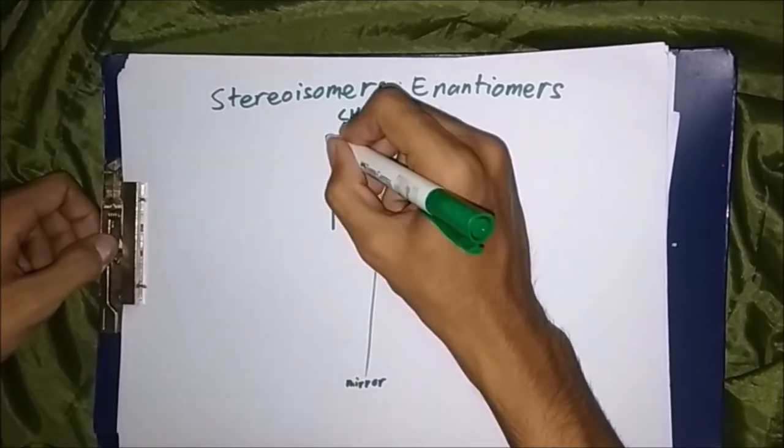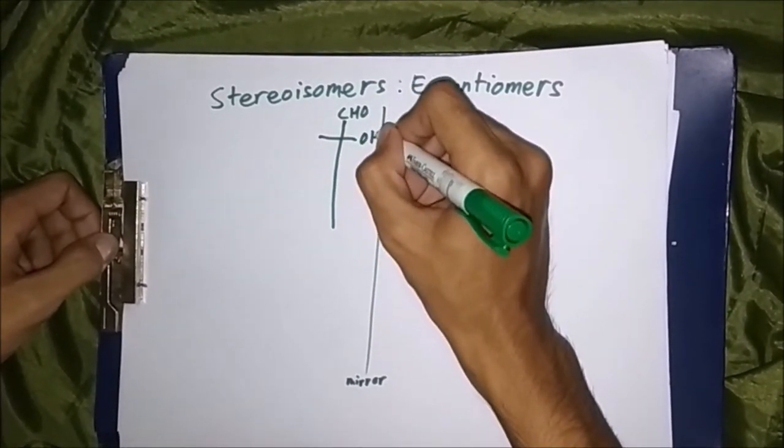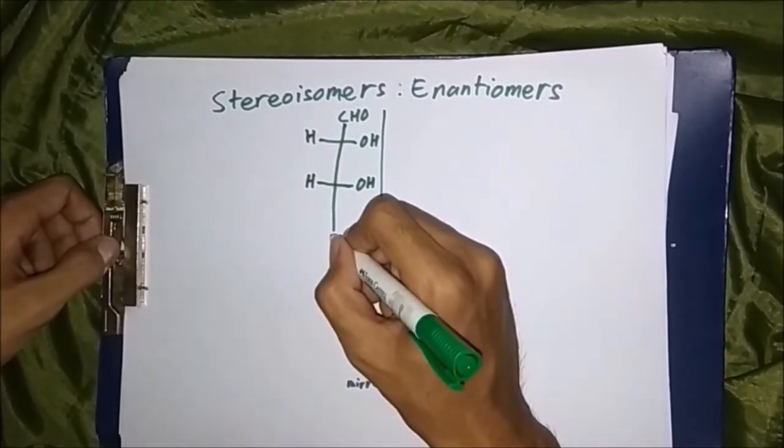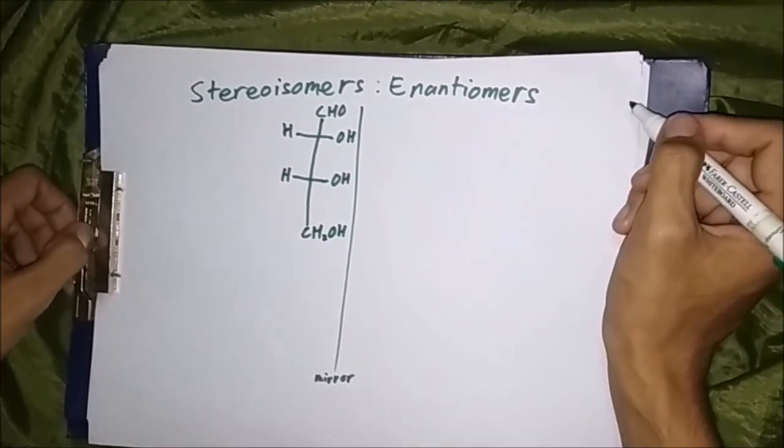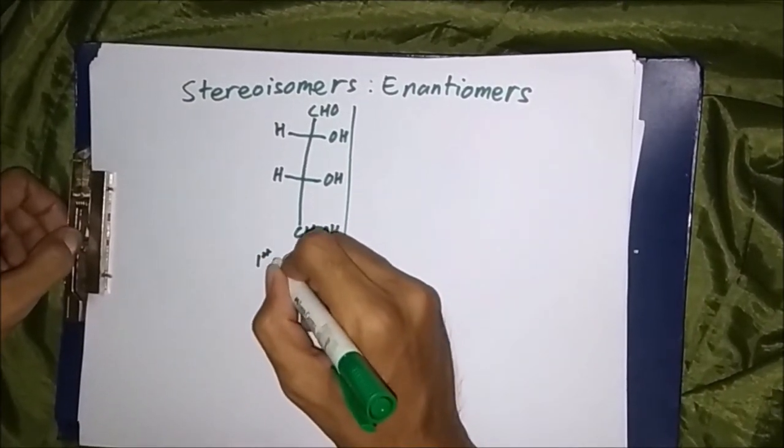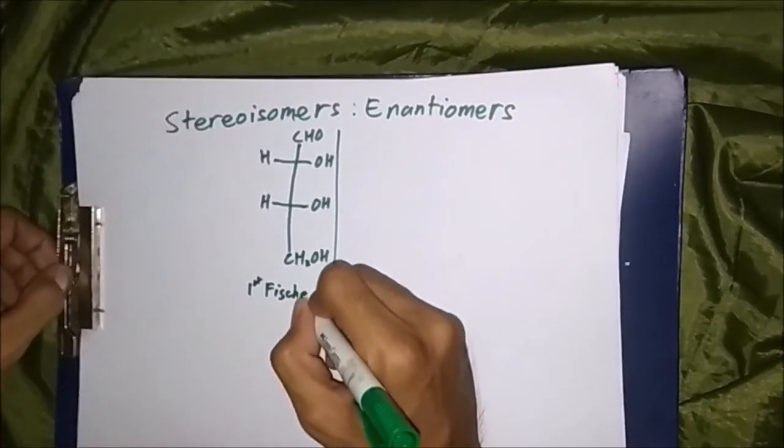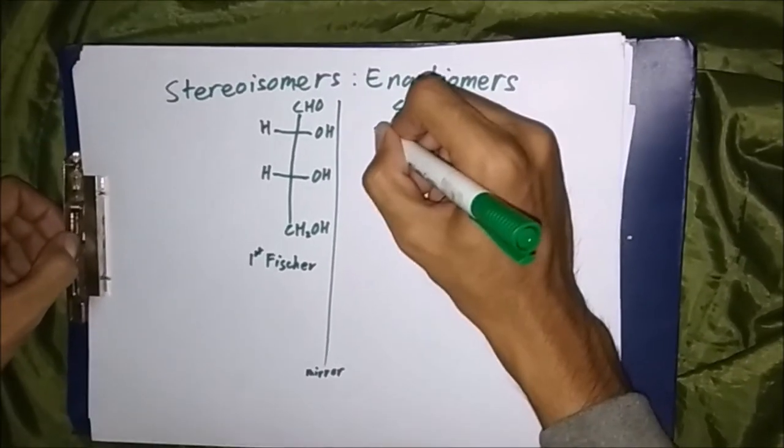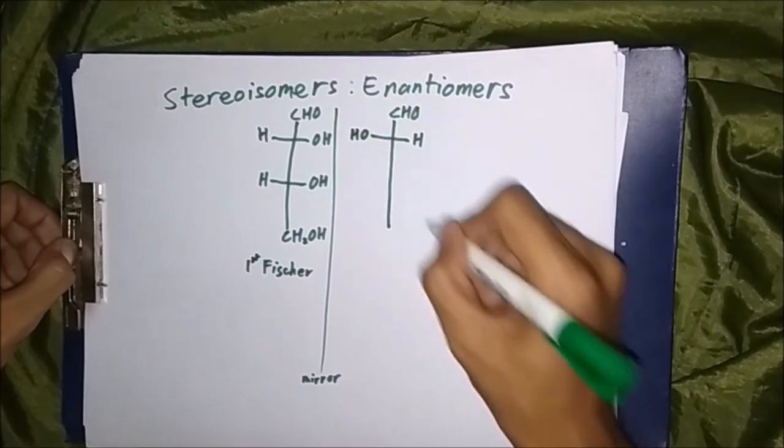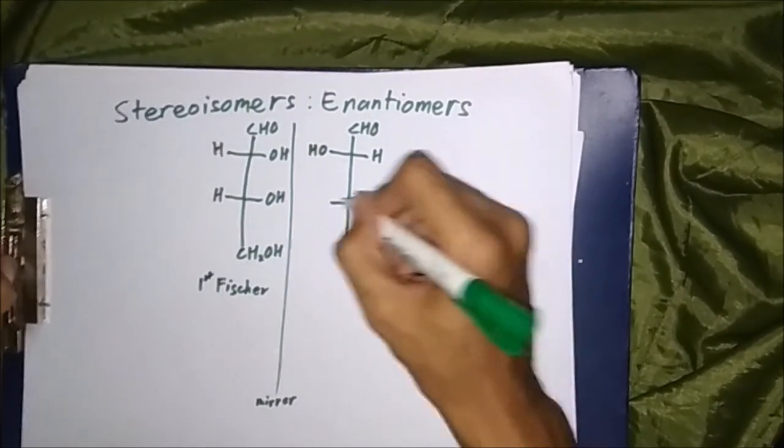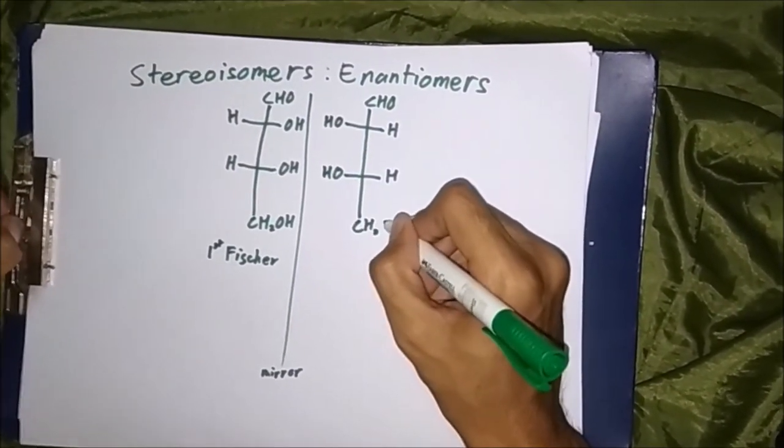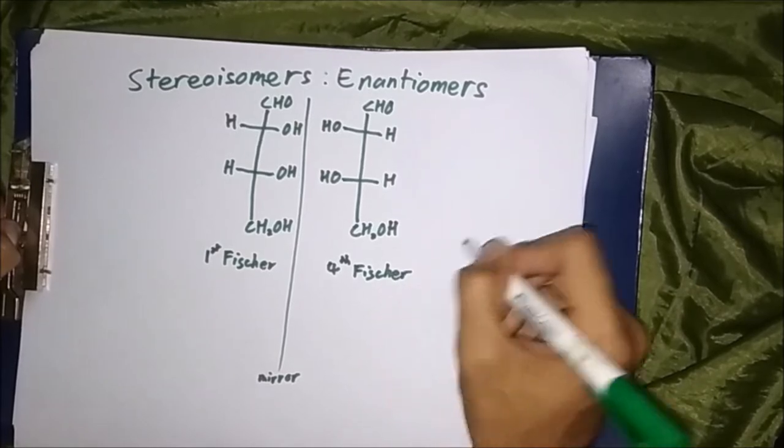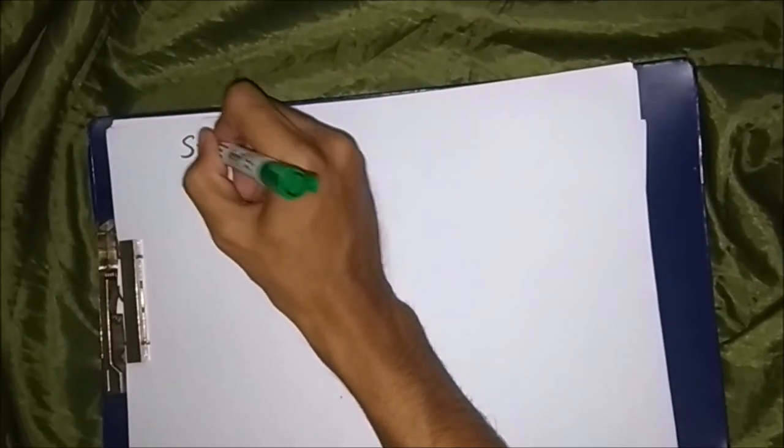Let's go into an example. For this example we use the first Fischer projection, the original one. Enantiomers are just mirrors of one another, like the first Fischer projection and the fourth Fischer projection. In the first Fischer projection, both hydroxyl groups are on the right side, while in the fourth Fischer projection, both hydroxyl groups are on the left side. So they are enantiomers to one another. This is just an example of the many enantiomers that could be formed.